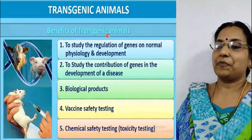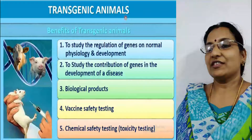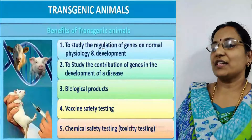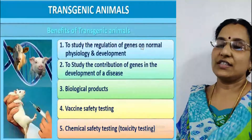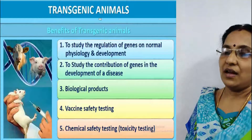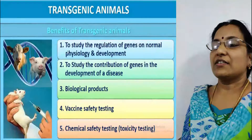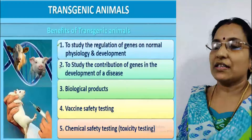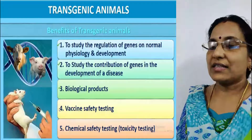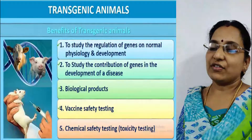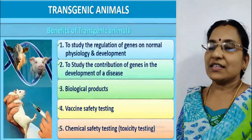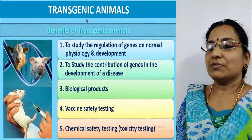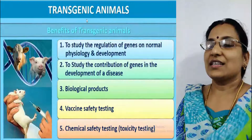The benefits of transgenic animals include: first, to study the regulation of genes on normal physiology and development; second, to study the contribution of genes in disease development; third, biological products; fourth, vaccine safety testing; and fifth, chemical or toxicity testing.